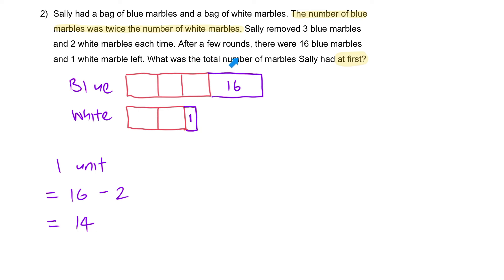We know that every single box is 14. Now we can solve it. What was the total number of marbles Sally had at first? Well, it's everything. So the total number of marbles Sally had at first: five units, so it's 5 times 14 plus the 16 and the one, which is plus 17, and that will give you the answer of 87.